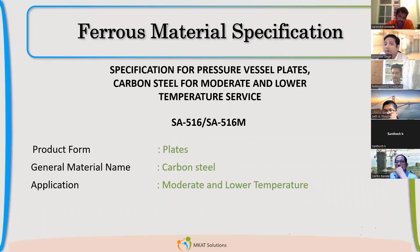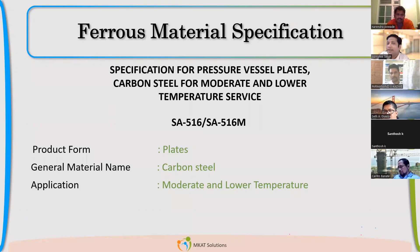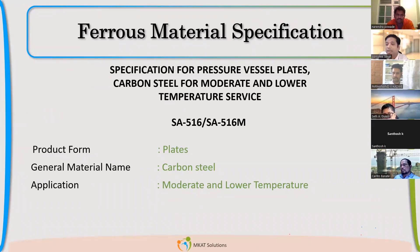Third is: what is the application? Whether we want to use it for very low temperature like cryogenic, or low temperature like minus 45, 50, 60, or low to moderate. Low to moderate is generally minus 45 to 380–400 degrees. That is the range within which we should use this SA 516 material. So these are the three pieces of information hidden in just the description.